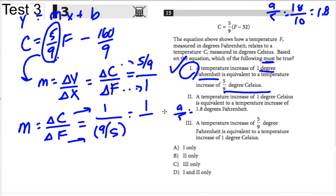So, wouldn't one degree change in Celsius be equivalent to one-point-eight degrees change in Fahrenheit? Well, yes, it would. So, two is also true.